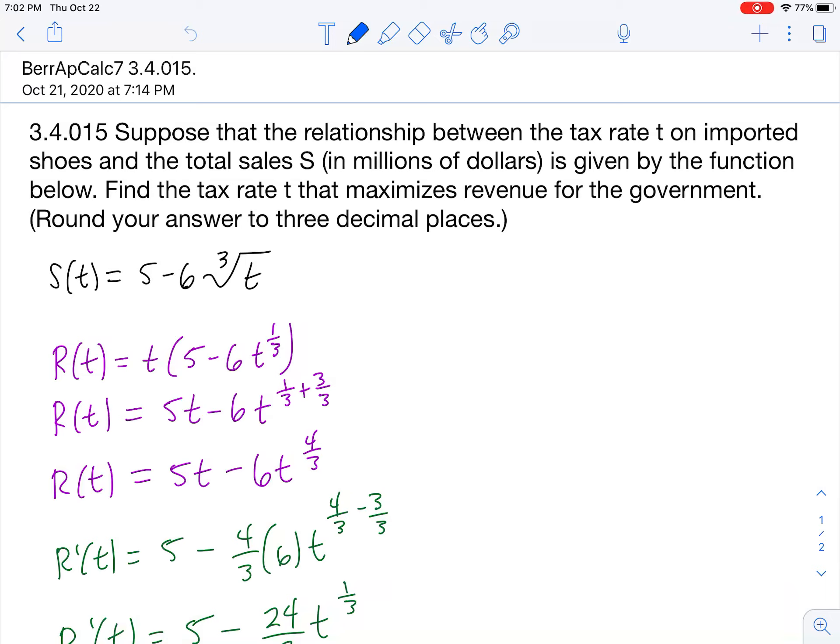For this problem, we are looking at the relationship between tax rate t on imported shoes and the sales S in millions of dollars, and it is given by this function right here. Find the tax rate t that maximizes revenue for the government. Round your answer to three decimal places.